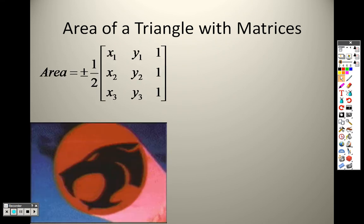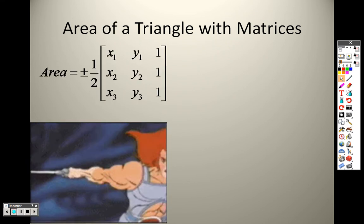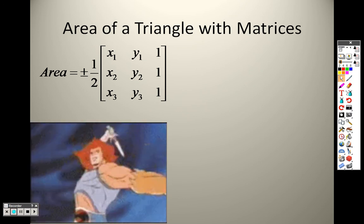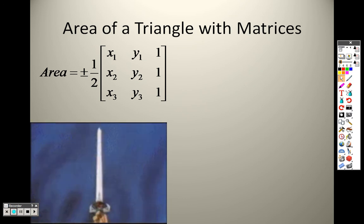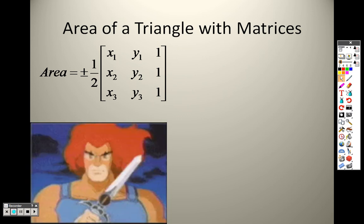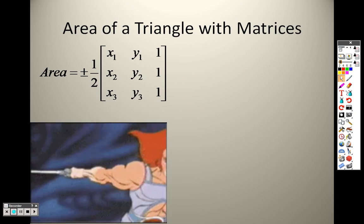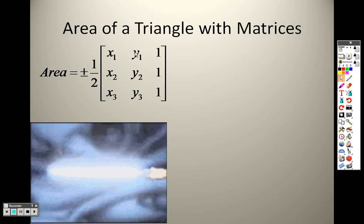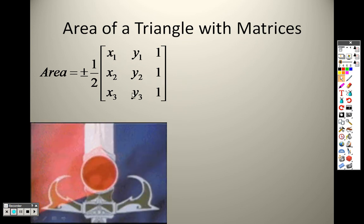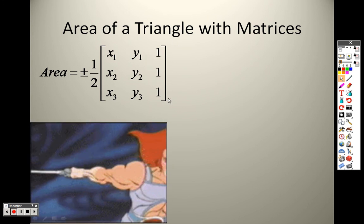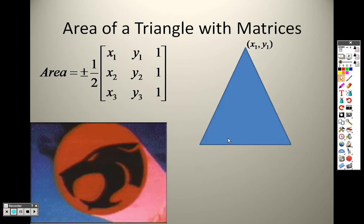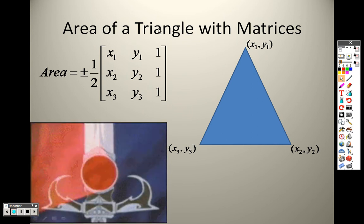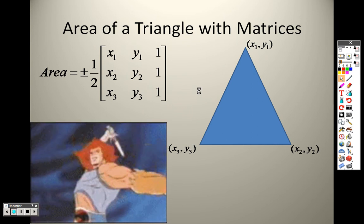You can use determinants to find area of triangles by giving three points. If you have a triangle on a coordinate plane, you can connect all the points together. You can find the area by doing one-half times the first point, the second point, the third point. Notice there's just ones down the side. You plug in the points straight across and it's one the whole way down the third column.